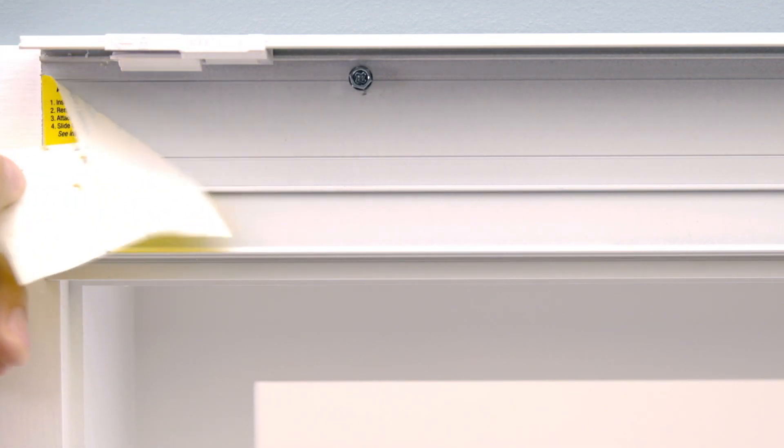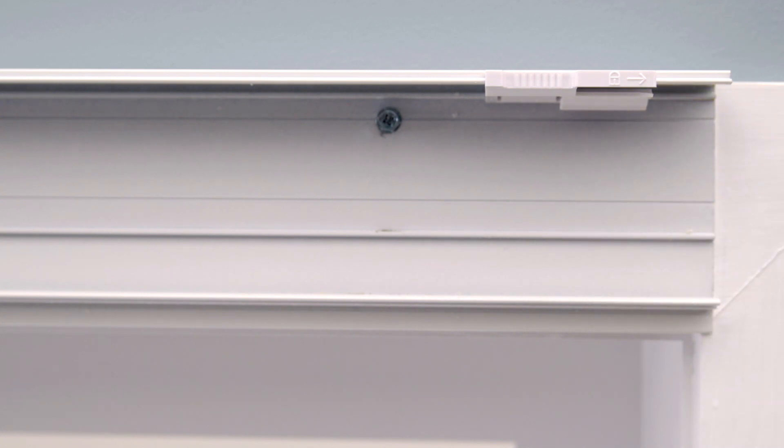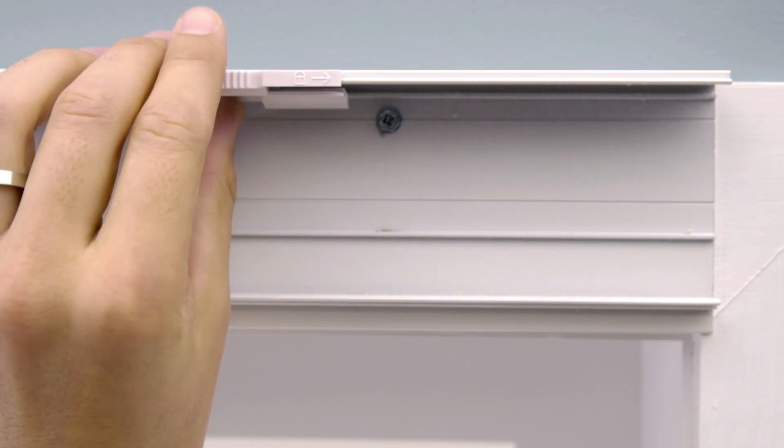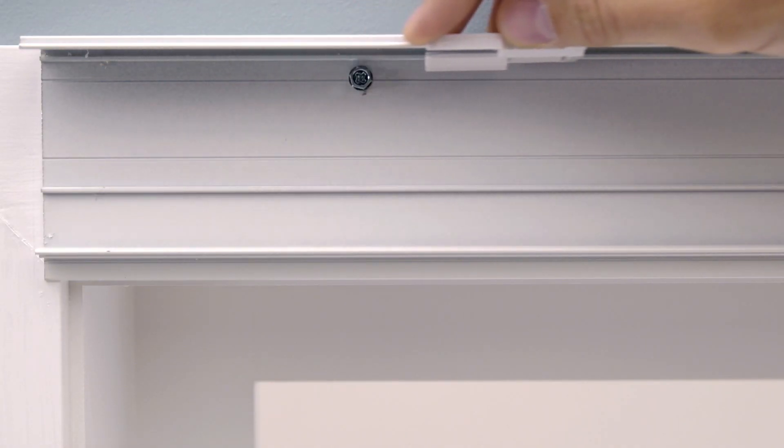Next, remove the bracket lock labels on either side of the mounting rail and position each at least one and a half inches towards the center of the mounting rail.